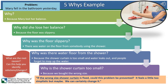Now let's look at a problem that is closer to the work you do every day. The problem is: Mary fell in the bathroom yesterday. Let's go through the five whys. Why did Mary fall in the bathroom yesterday? Because she lost her balance. Why did she lose her balance? Because the floor was slippery. Why was the floor slippery? There was water on the floor from somebody using the shower. Why was there water on the floor from the shower? Because the shower curtain is too small and water leaks out, and people forget to mop up the water. Why is the shower curtain too small? Because we bought the wrong size. That takes us to the end of the five whys.